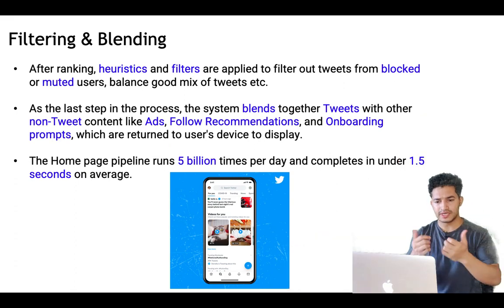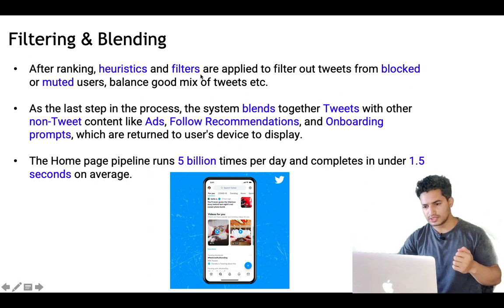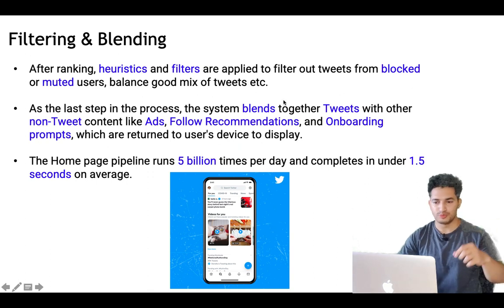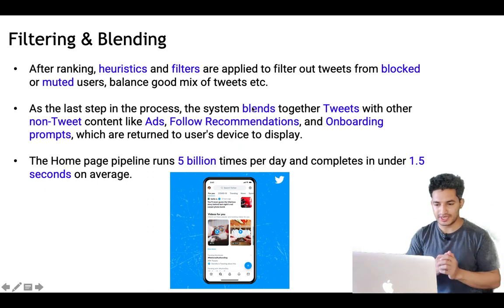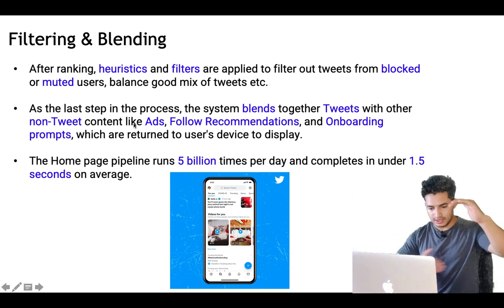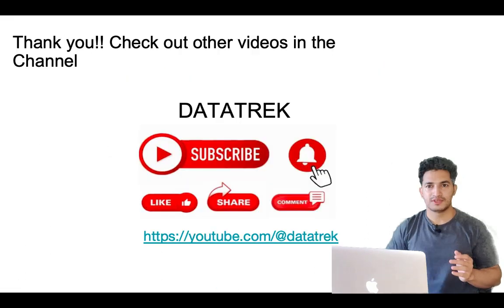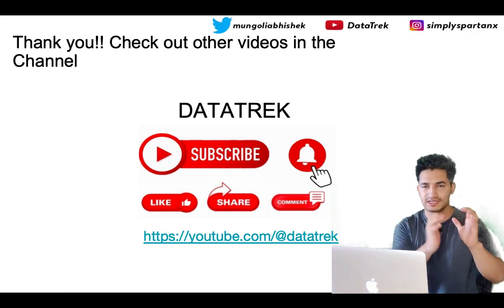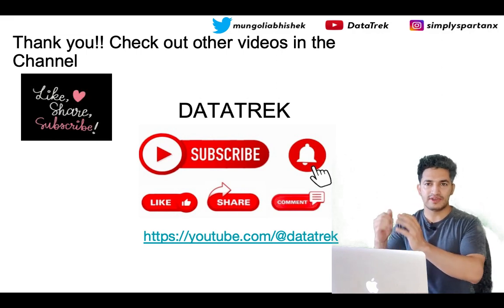After candidate sourcing and ranking, there is a filtering step and a blending step. In the filtering step, heuristics and filters are applied to remove tweets from blocked or muted users and to ensure a good mix of content without repetition. In the final blending step, the system blends ranked tweets with non-tweet content like ads, follow recommendations, and onboarding prompts, which are returned to the user's device. The home page pipeline runs 5 billion times per day and completes in under 1.5 seconds on average.